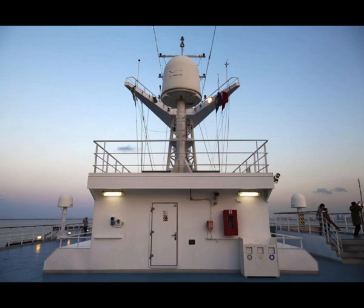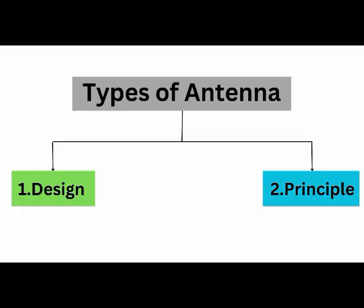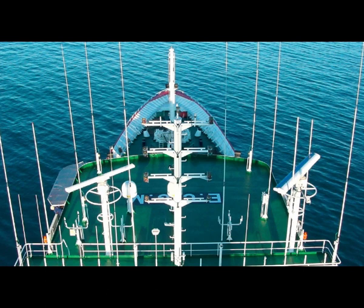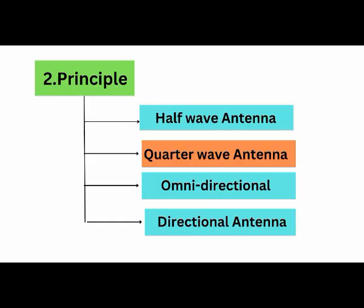On the basis of principle, the types are: half-wave or dipole antenna, quarter-wave or Marconi antenna, active antenna, omnidirectional antenna, and directional antenna. The half-wave or dipole antenna is used by VHF on board ship — it is omnidirectional in nature and these antennas are rigged vertically. The VHF antenna is slightly longer than MF and HF antennas, as VHF works on line-of-sight communication. The quarter-wave antenna is also known as the Marconi antenna — named after Marconi who found it — and it is used for MF and HF equipment.